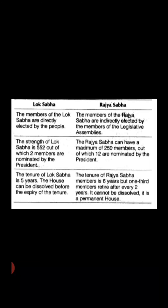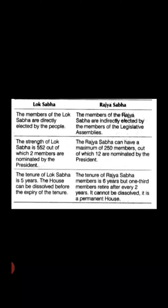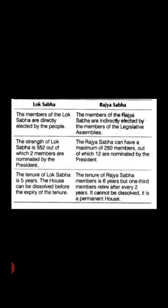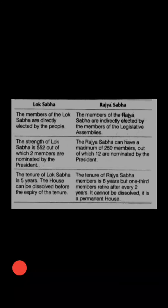The tenure of Rajya Sabha members is six years, but one-third of the members retire after every two years. So every two years, one-third of the total Rajya Sabha members retire and new members are elected. Unlike the Lok Sabha, the Rajya Sabha cannot be dissolved — it is a permanent house.